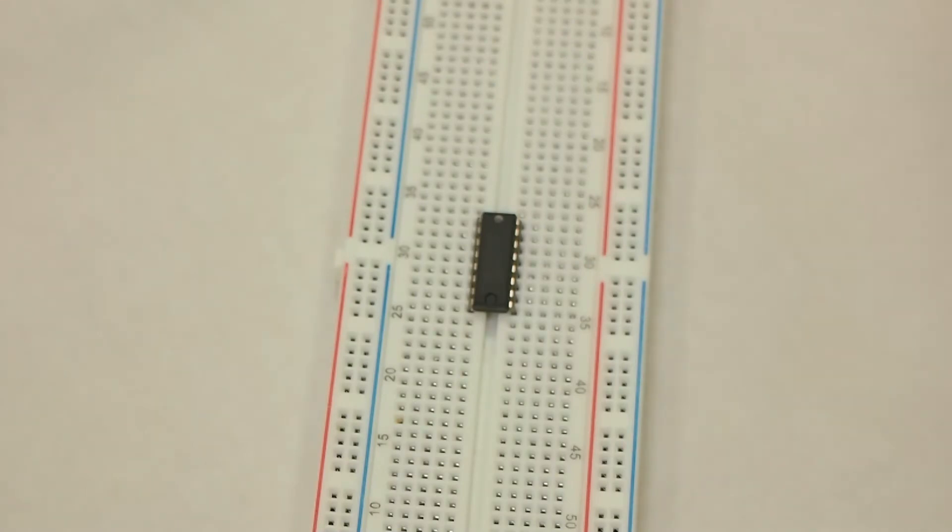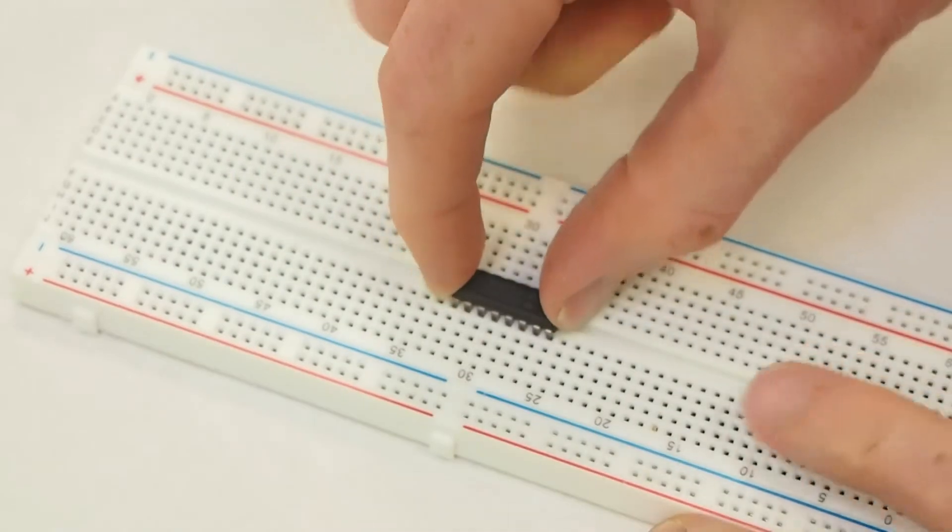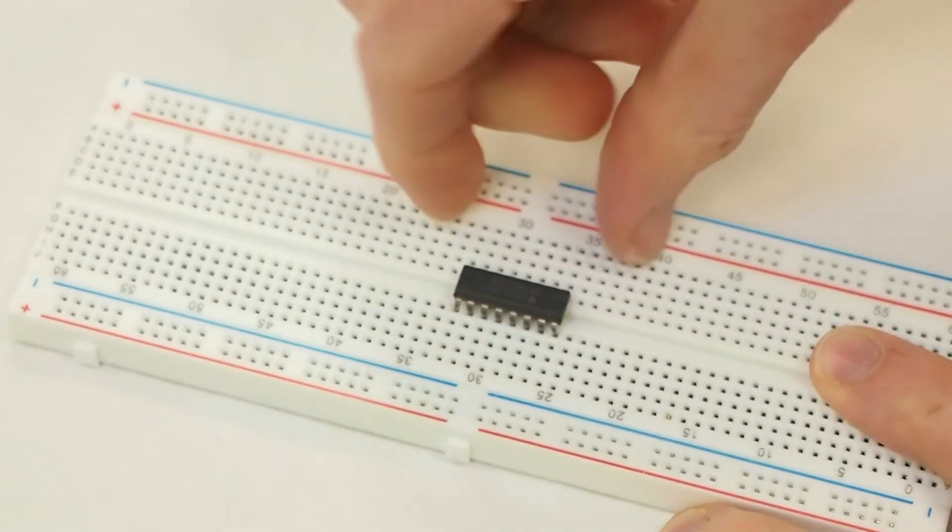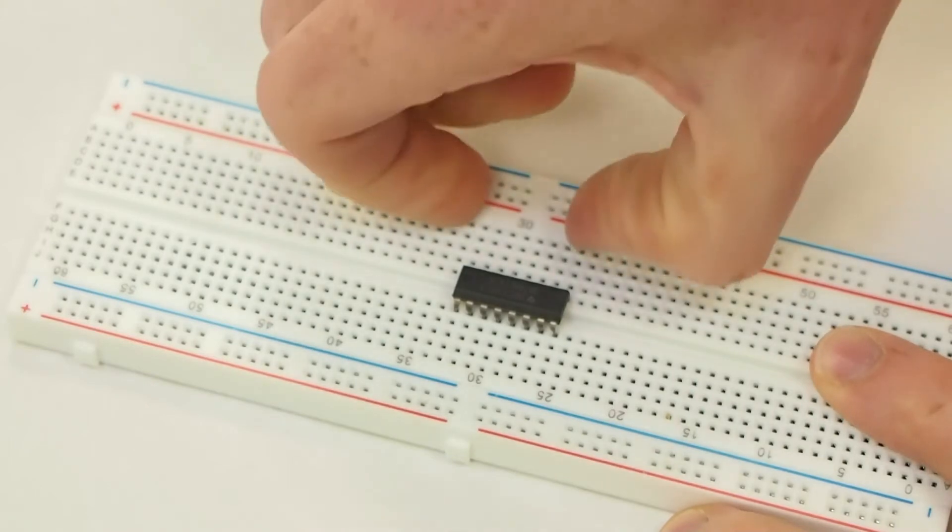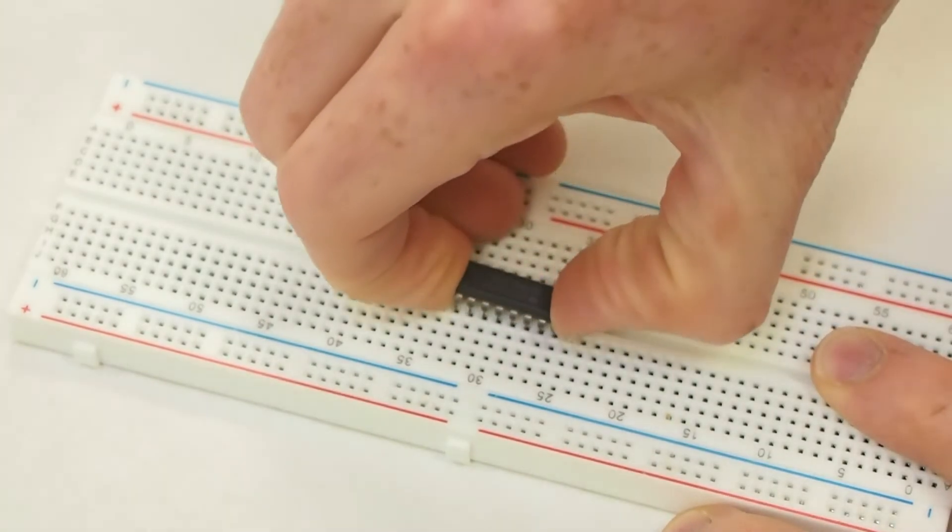Getting the chip out can also be a challenge. We can do the same sort of thing that we did with the FPGA, by reaching in and then using a lever action with your fingers to pull it out.